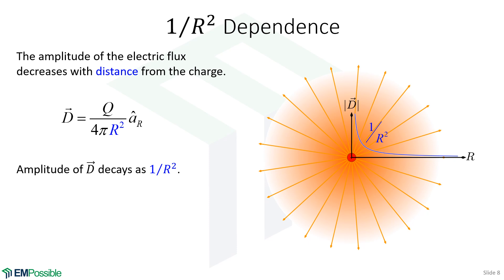Let's look at this equation a little bit. Notice in the denominator there's an R squared, so the magnitude of the electric flux decays as 1 over R squared. Why R squared and not R or R cubed? If we think about moving away from the origin, the surface area of that sphere increases with R squared — so as that energy distributes itself and we move away, that energy becomes less and less dense. That's why the magnitude goes down by R squared. In three dimensions, that magnitude decays as 1 over R squared.